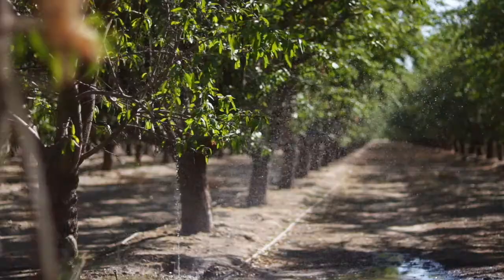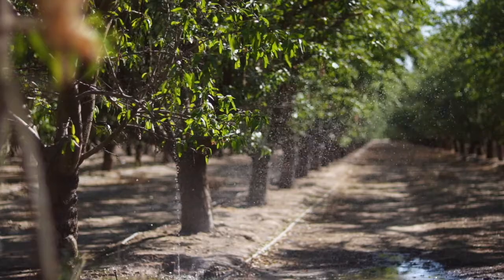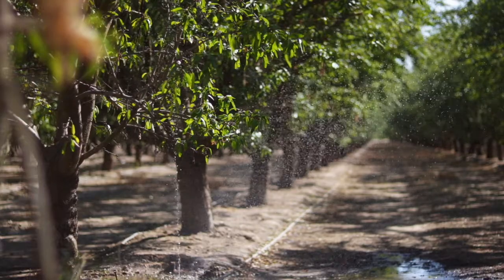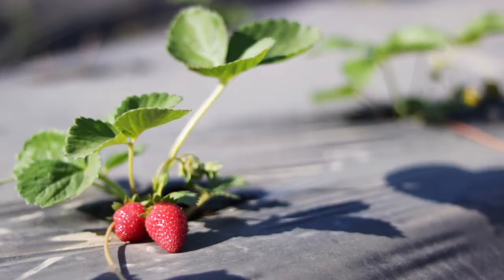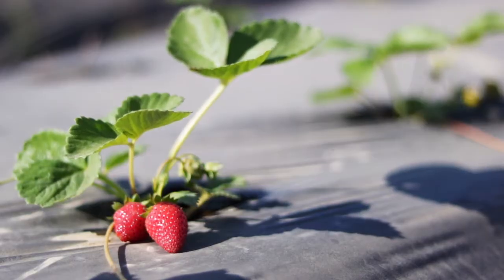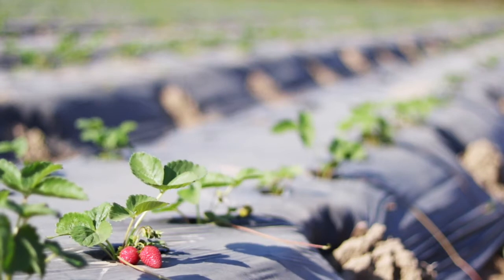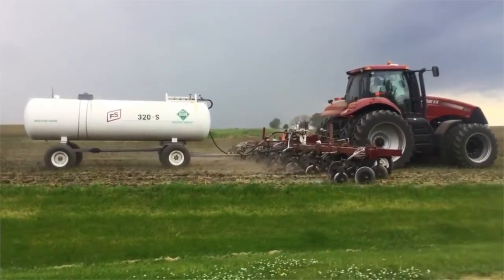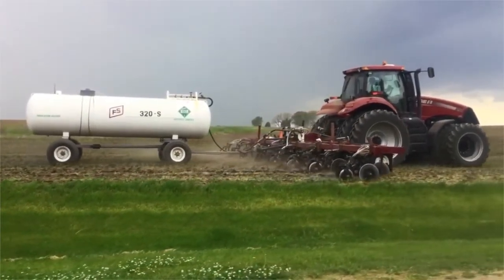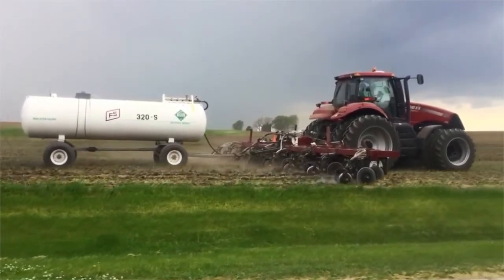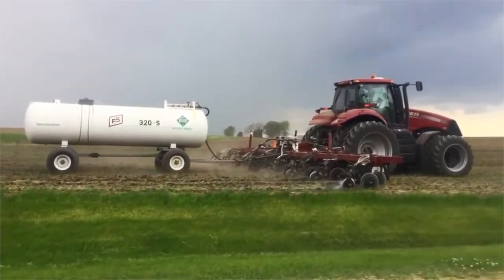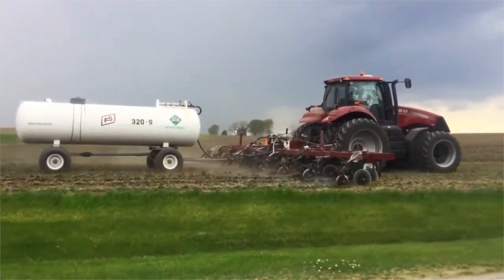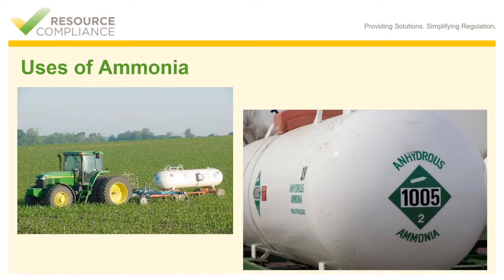A very common use of anhydrous ammonia is as a fertilizer. Ammonia provides a rich source of nitrogen to enhance the health and growth of crops. Across the country in agricultural regions, it is common to run across ammonia nurse tanks like the ones pictured in this slide.